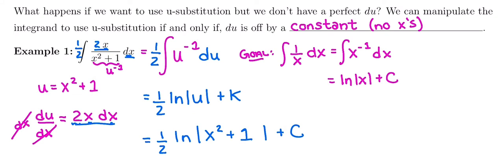And we're going to do plenty more of these, so we'll get the hang of figuring out the constant that we're missing. But you can always manipulate to get your perfect du as long as you are just off by a constant, not any x terms.